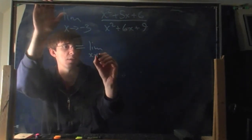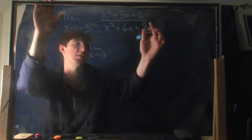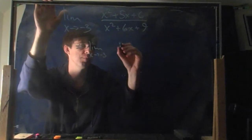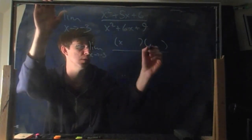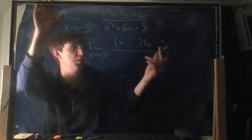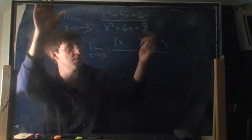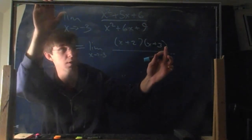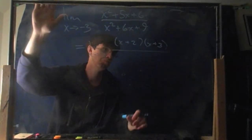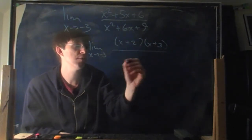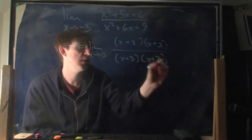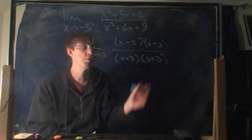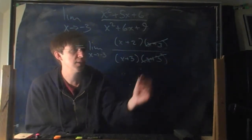So it's still the limit; I'm not doing the limit yet, just factoring. On top: x² + 5x + 6 factors as (x+2)(x+3) — you need two numbers with product 6 and sum 5, which are 2 and 3. On the bottom: x² + 6x + 9 factors as (x+3)(x+3), since 3 times 3 is 9 and 3 plus 3 is 6. Now you can see the (x+3) cancels on the top and bottom.